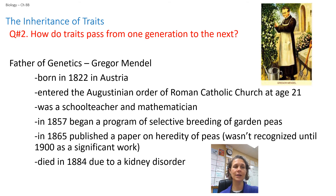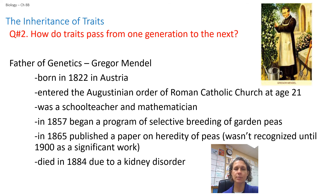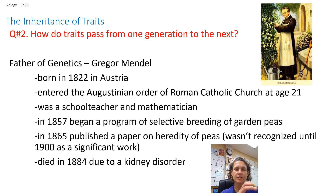Hi guys. So chapter 8, part B. This is the second half of chapter 8. This is genetics — when we talk about genes, Punnett squares, and all those kinds of things. We already know what happens in the cell to the DNA because of mitosis, meiosis, and the different cell divisions.